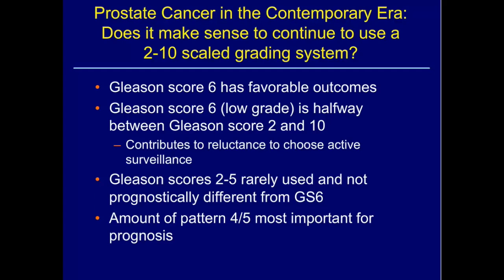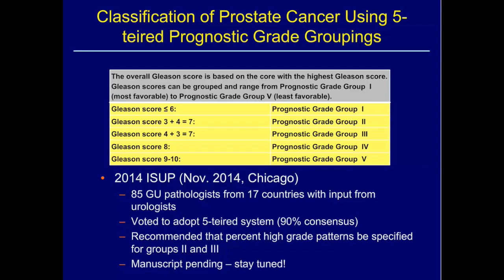It's been proposed by Epstein and colleagues that we do away with Gleason scoring and look at prognostic groupings instead: Gleason 6 and below as the most favorable prognostic group, three-plus-four as the second, four-plus-three as the third, Gleason 8 as the fourth, and nine and ten as bad tumors. The ISUP met again on November 1st in Chicago, looked at data from Johns Hopkins and from the EAU multi-institutional dataset, and voted to adopt a five-tiered system with 90% consensus among the 85 attendees.